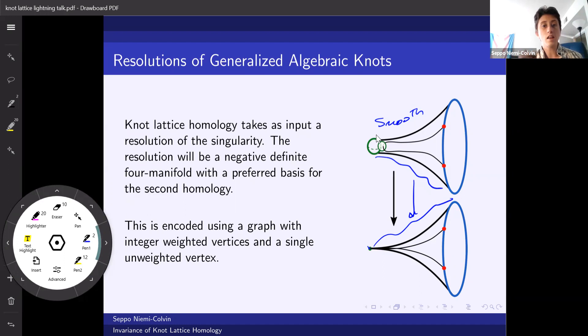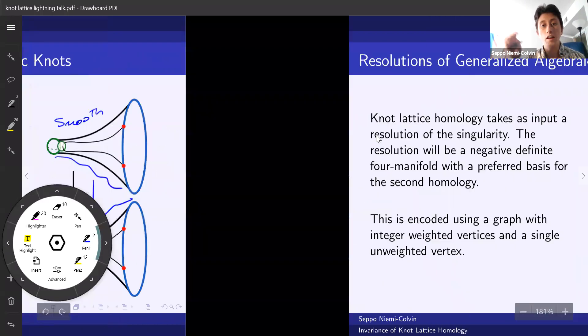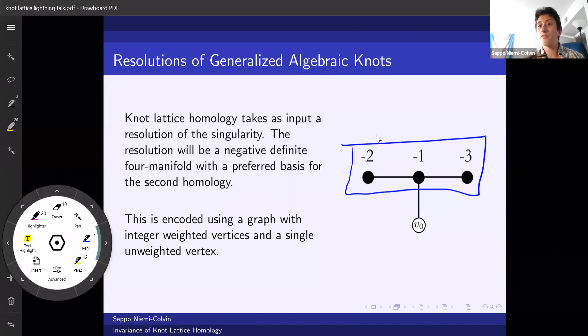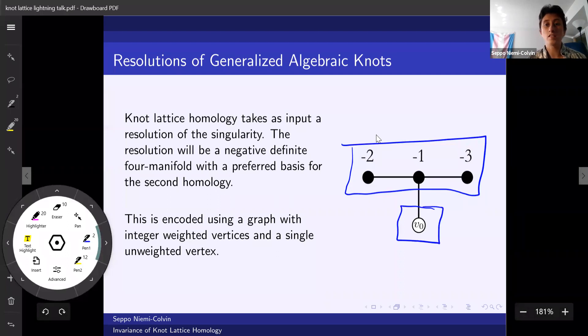This gives us a negative definite 4-manifold, think plumbing, with a preferred basis for the second homology. This information is encoded using a graph with integer-weighted vertices and a single unweighted vertex. The integer-weighted vertices represent the resolution. Here we just have single weights. You can have other information to keep track of genus. The weights here represent twisting an Euler number, and then the unweighted vertex picks out the curve inside it.